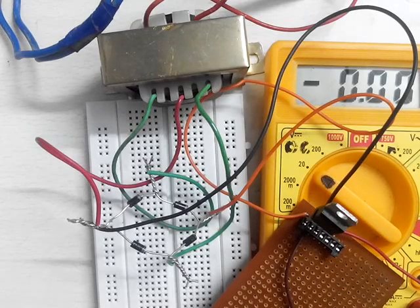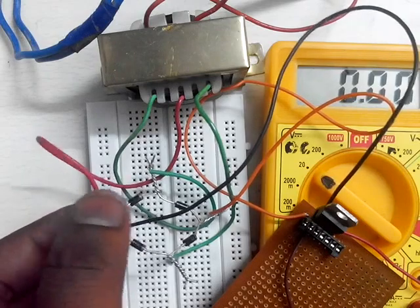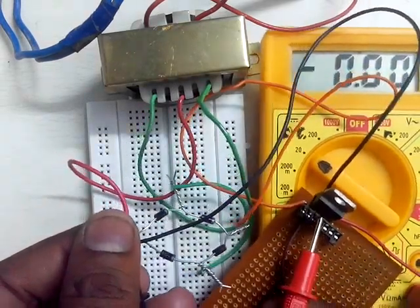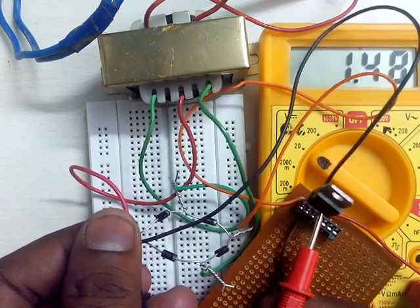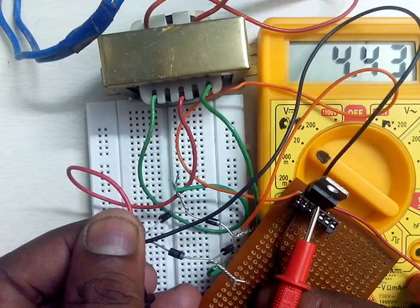Now we will check the output at the IC. This is essentially ground, this is output side. Now see, we are getting almost 5 volts output there.